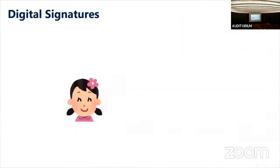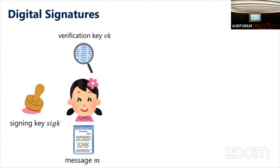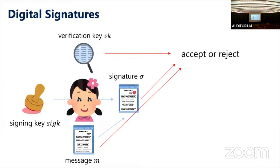I will now explain a bit more detail of our constructions. First, let me explain what digital signatures are. In digital signatures, a signer generates a pair of keys: a verification key and a signing key. The verification key is made public and available to everyone, while the signer keeps the signing key secret. When the signer wants to generate a signature on a message M, the signing key is used to generate the signature, which can then be verified by anyone using the public verification key.